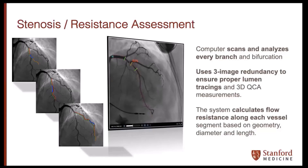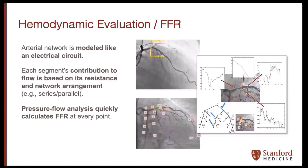It then uses three-image redundancy to ensure proper lumen tracings and give 3D QCA measurements. Once done, it calculates flow resistance along each vessel segment based on geometry — the diameter and length in that 3D luminal model. The whole arterial network, or tree, is modeled much like an electrical circuit, dividing the coronary tree into segments, with each segment's contribution to flow based on its resistance and network arrangement — circuits in series or in parallel.